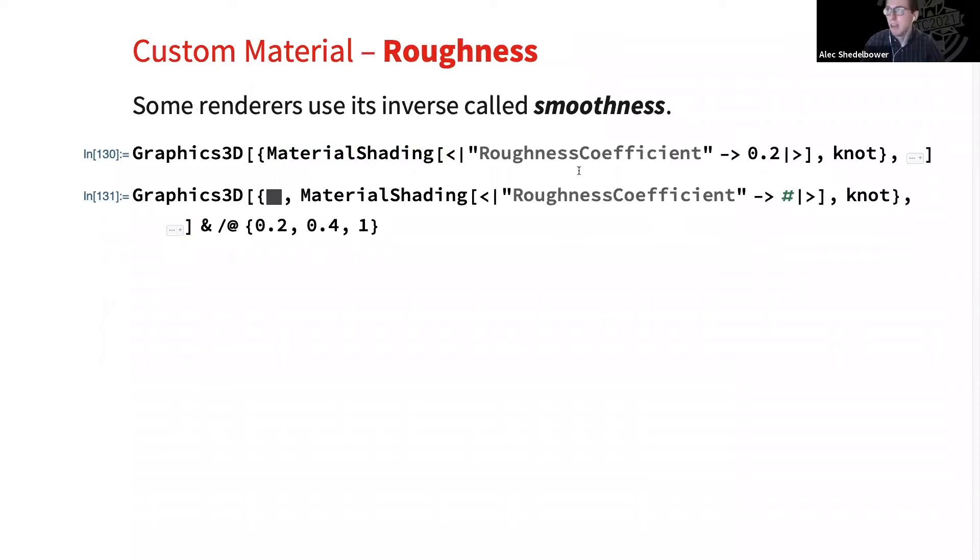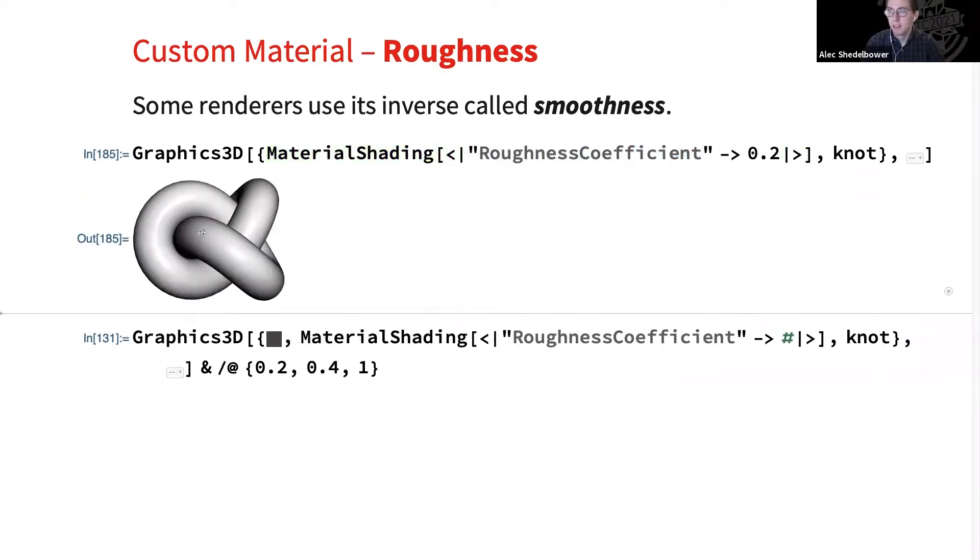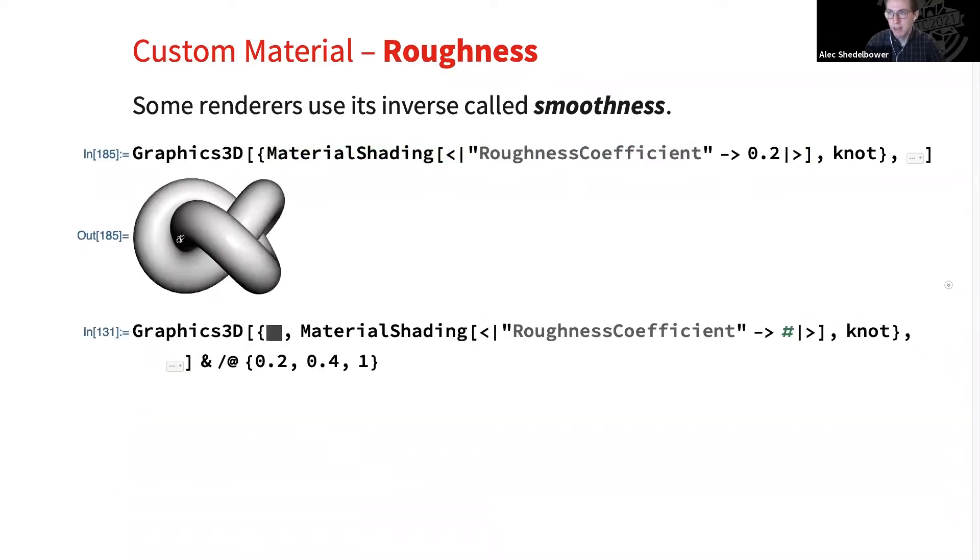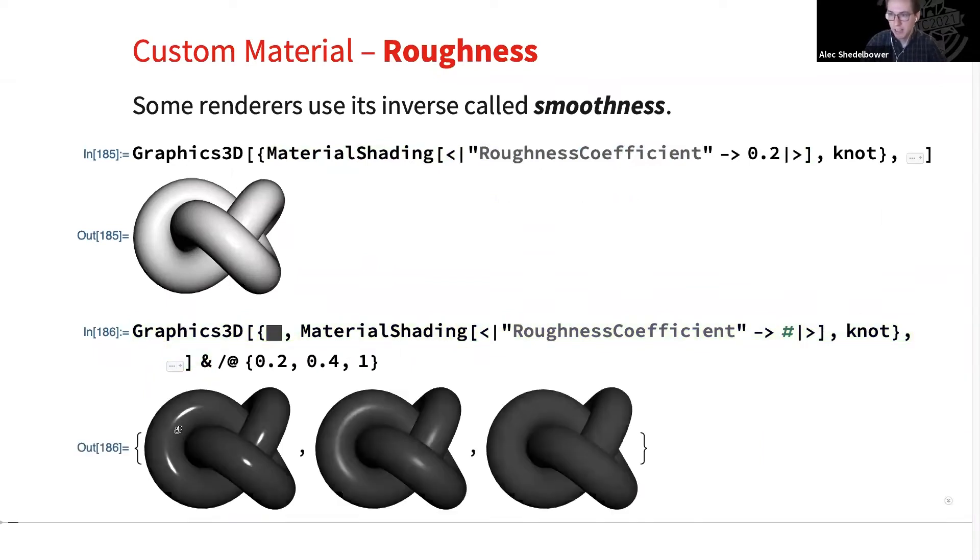Next up, we have roughness. This will be a very useful parameter. So this controls how rough the surface is. Now you notice it's controlled by this roughness coefficient parameter. And in general, you'll see a lot of these parameters end in coefficient. And you can think of that as signifying that it takes values from 0 to 1. And those values kind of correspond to a percentage. So in this case, this material will be 20% rough. So it's fairly smooth, and we've got some nice white highlights on it. But we can use different roughness values here. So we'll set a very dark base color so the highlights stick out. And we can see at 20%, 40%, and 100% roughness what that looks like. So you can see the highlight here starts very sharp and gets more dull as we go to the right.